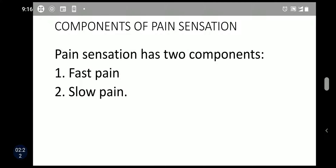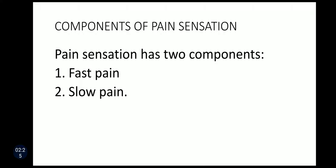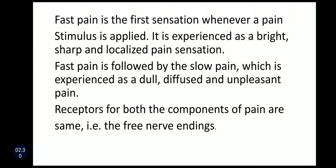There are mainly two components of pain: fast pain and slow pain. Fast pain is the first sensation whenever a pain stimulus is applied; it is experienced as a bright, sharp, and localized pain sensation. Fast pain is followed by slow pain, which is experienced as a dull, diffused, and unpleasant pain. The receptors for both components are the same — the free nerve endings.